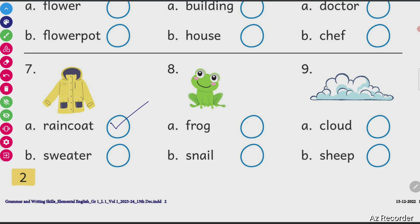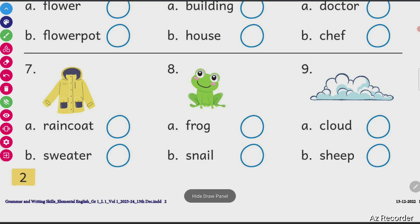This is a snail or a frog? Frog. This is a cloud or a sheep? This is a cloud. So we have identified a few common names of things.